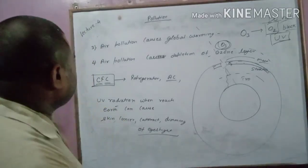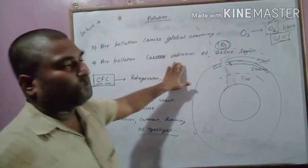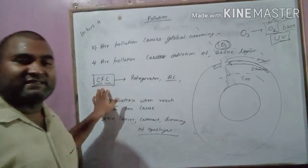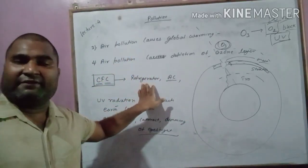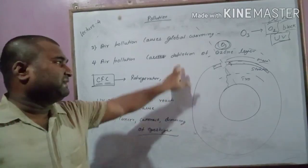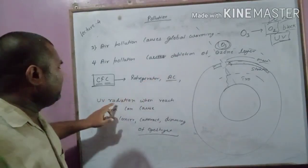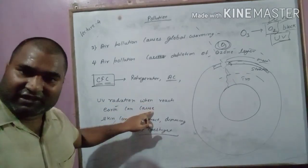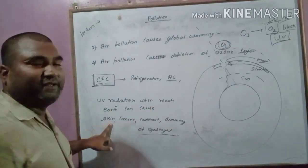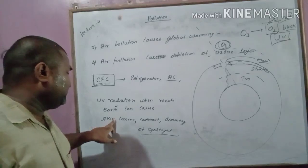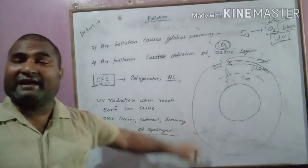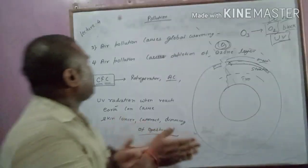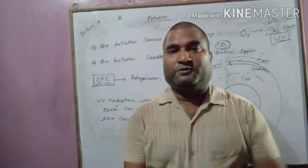The depletion of the ozone layer is due to the pollutant CFC, which is released from refrigerators and ACs. This depletion allows UV radiation to reach the earth's surface, which can cause skin cancer, cataract, and dimming of eyesight. So these are the harmful effects of air pollution.